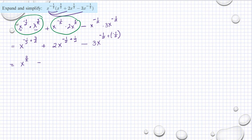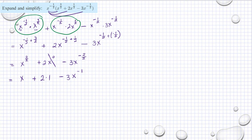We have x raised to 2/2, plus 2x raised to zero — which equals 1, so that becomes 2 times 1 — minus 3x raised to negative 2/2. So we have x raised to 1 — we don't write the 1 — and then minus 3x raised to negative 1. The simplified form is x + 2 minus 3 divided by x.